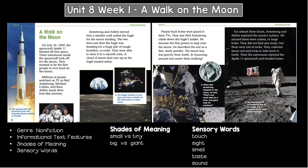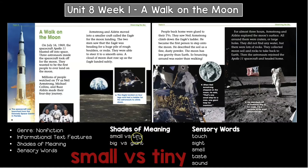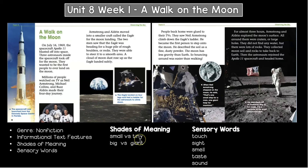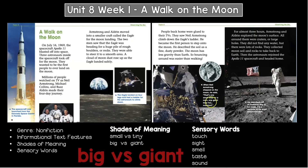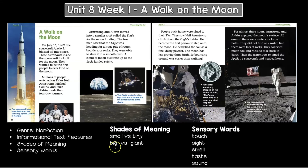Words can have similar meanings, but some words are stronger than others — we call that shades of meaning. This author used the word 'small' instead of 'tiny.' Right here I see: 'That's one small step.' The author did not choose the word 'tiny' because 'tiny' seems much smaller. The author also used 'giant' — 'one giant leap for mankind' — and 'giant' has a stronger meaning than 'big.'